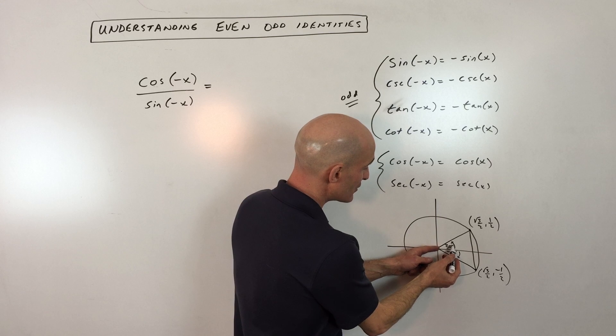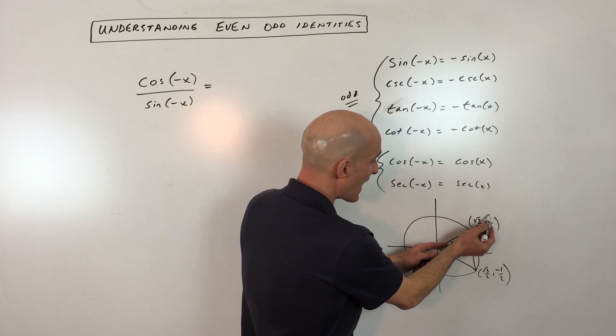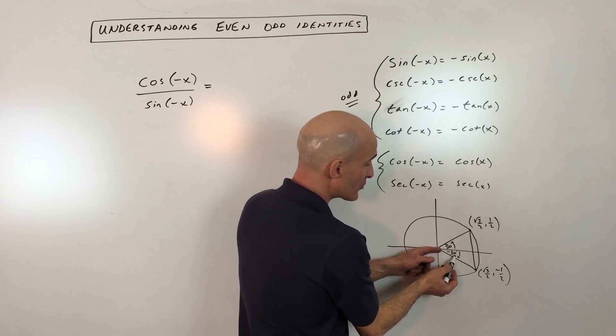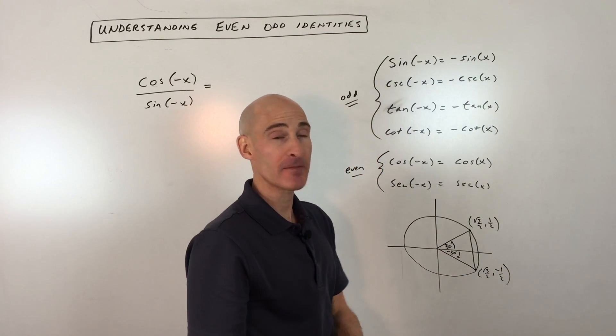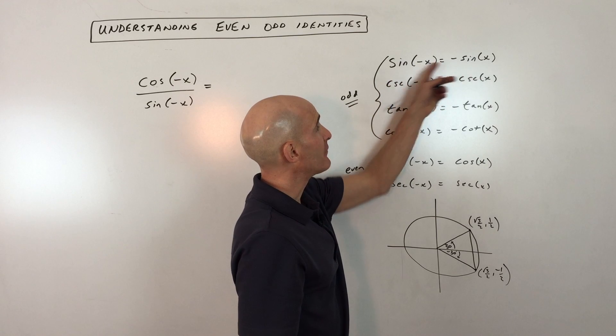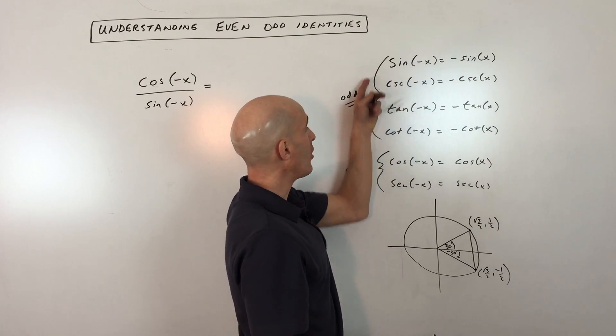For example, if you take the sine of 30 degrees, sine of 30 degrees is a half. The sine of negative 30 degrees, it's also a half, but see how it's the opposite sign? It's negative 1 half. So that means that it's an odd function. So all these ones are odd.